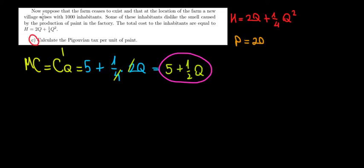Let's solve part C now. Suppose that the farm doesn't exist anymore and now there is a new village with a thousand inhabitants. These villagers don't like the smell of the paint and that causes a cost to them, and that cost is given by this function.